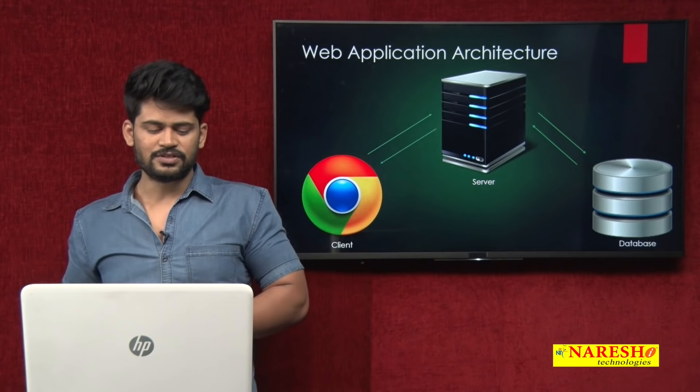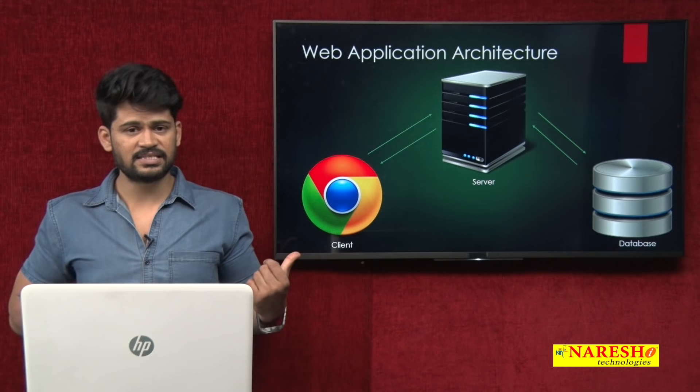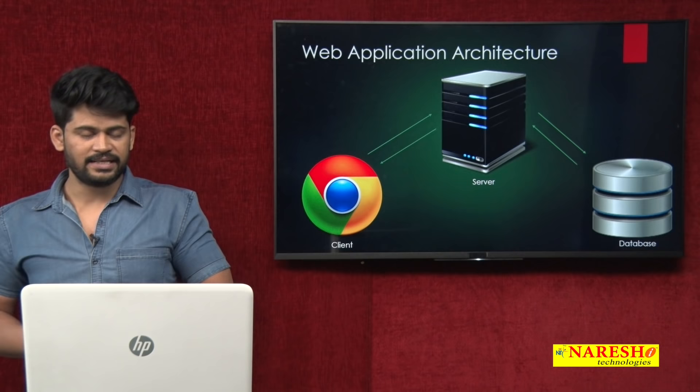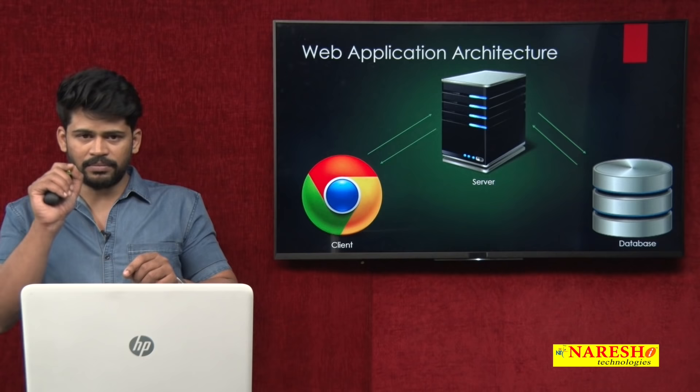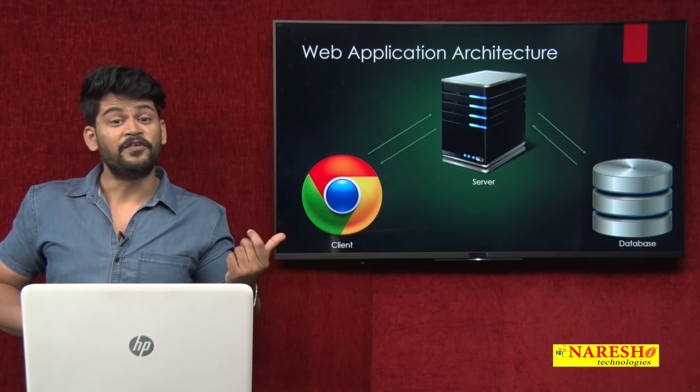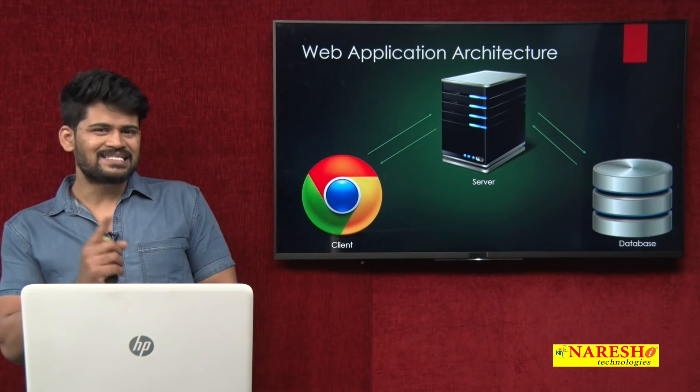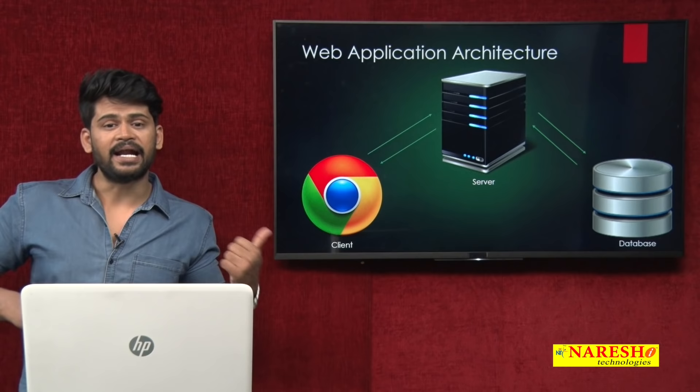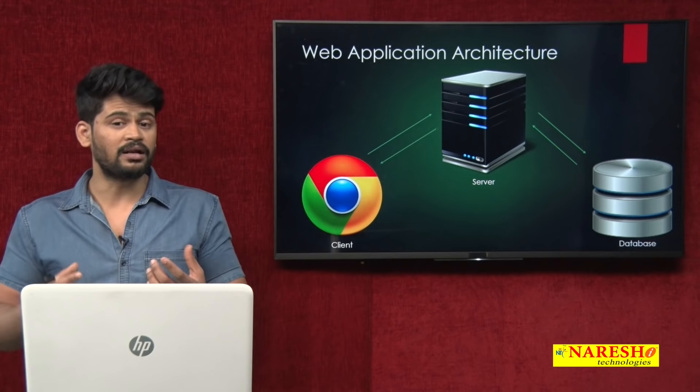We all have a Facebook account. Let's understand how Facebook works with this architecture. In your own laptop you have a browser — you enter your username and password and click the login button. Once you click login in your browser, it immediately sends one HTTP request to the Facebook server. What Facebook server does is some processing, then sends a request to the Facebook database asking: this person Naveen is trying to access a Facebook account — please check if he is a valid customer or not.